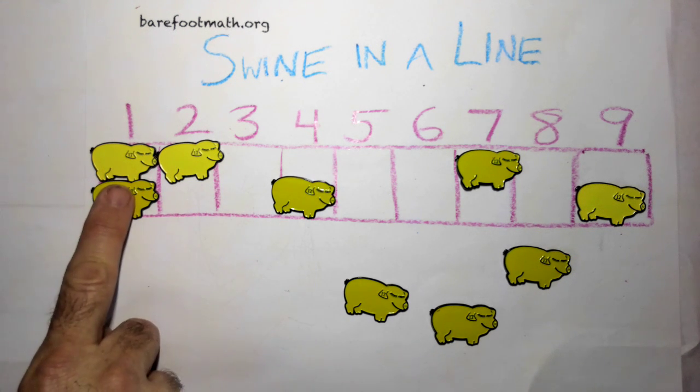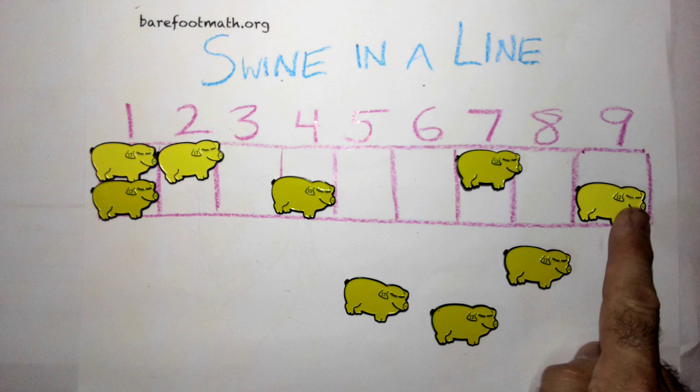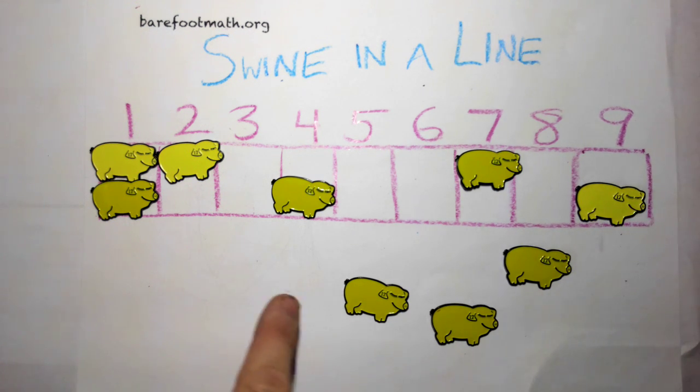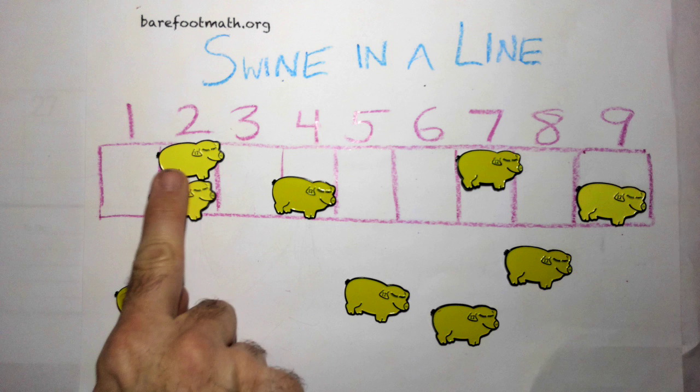When a pig jumps to the left from the pen on the far left, or jumps to the right from the pen on the far right, then that pig just goes back to wandering in the field. Left, right.